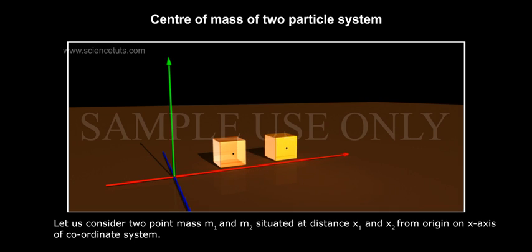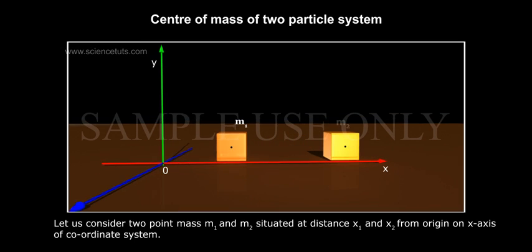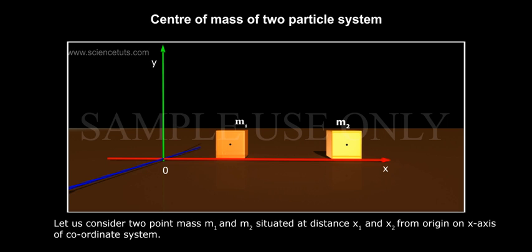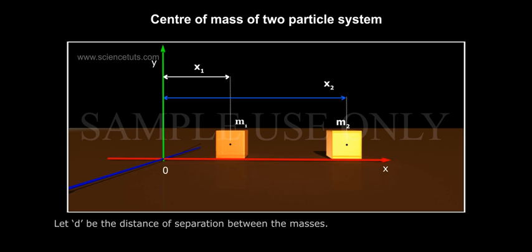Let us consider two point masses M1 and M2 situated at distances X1 and X2 from origin on the X-axis of coordinate system. Let D be the distance of separation between the masses.